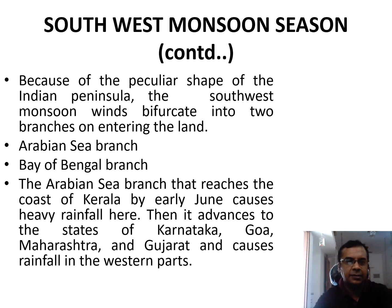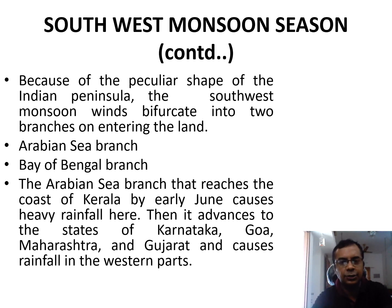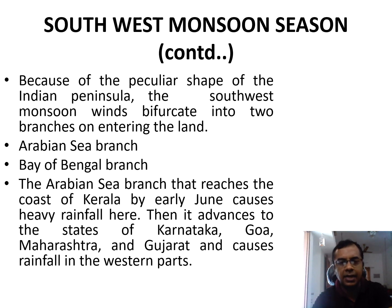The southwest monsoon bifurcates into two branches on entering the land. It bifurcates into the Arabian Sea Branch and the Bay of Bengal Branch.